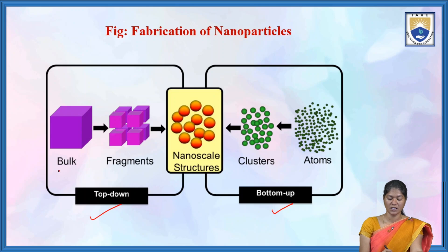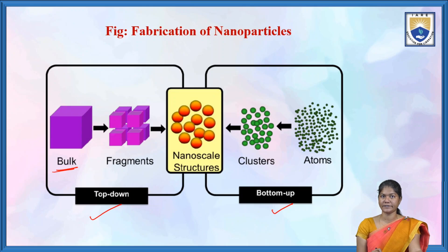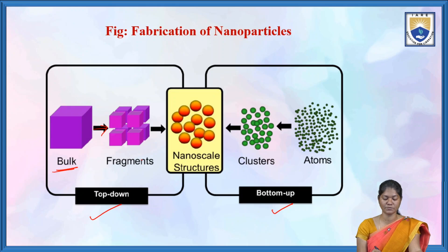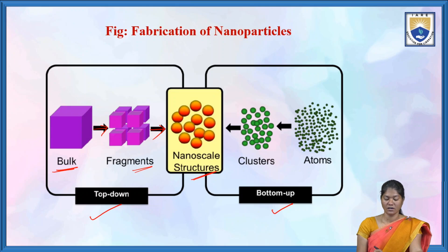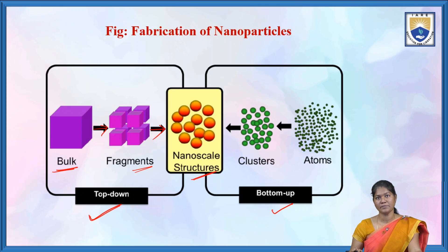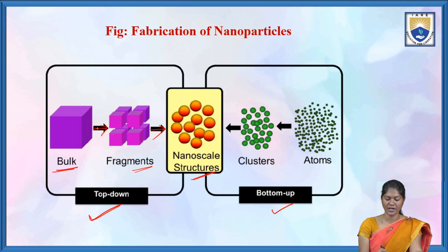In the top-down method, there is a bulk material — closely packed atoms. When it is reduced in size, it becomes fragments. Further reducing these fragments to very small size, we will get nanoscale structures. So in the top-down process, bulk material is reduced step-by-step: from bulk to fragments and then to nanoscale range to get nanoparticles.